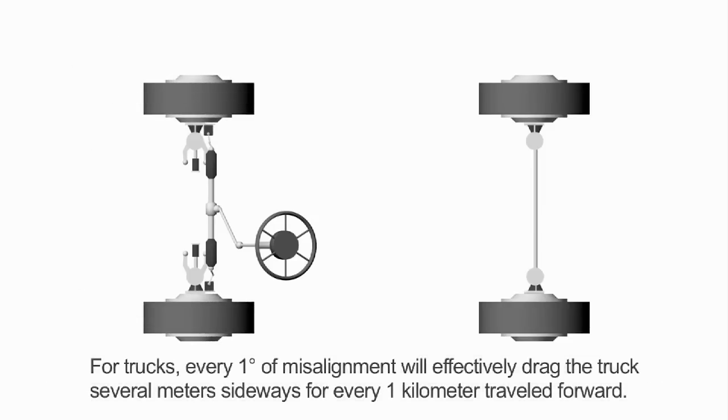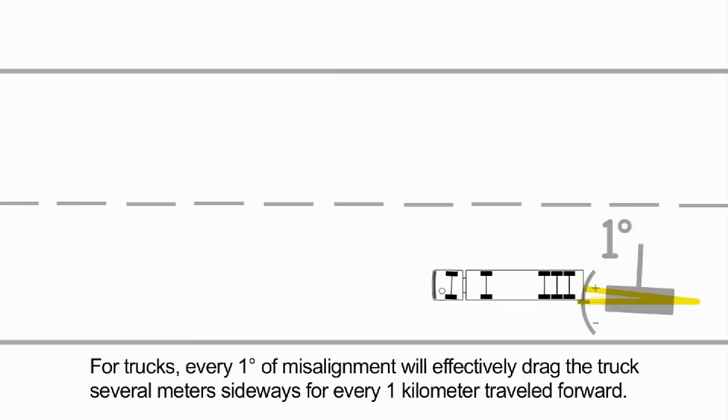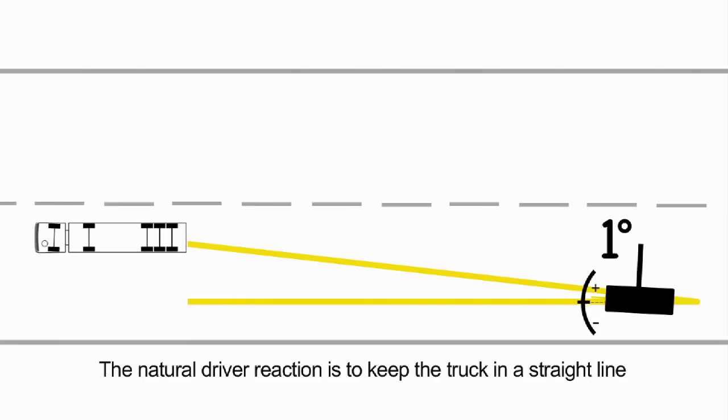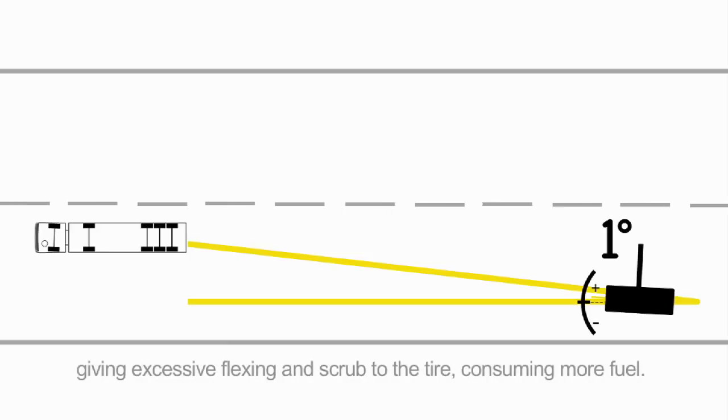For trucks, every one degree of misalignment will effectively drag the truck several meters sideways for every one kilometer traveled forward. The natural driver reaction is to keep the truck in a straight line by applying a small amount of steering input. This gives excessive flexing and scrub to the tire, consuming even more fuel.